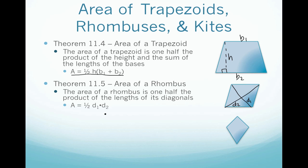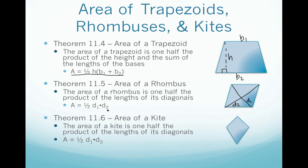The last area formula we're going to learn today is the area of a kite. The area of a kite is exactly the same as a rhombus: one-half of the product of the lengths of its diagonals. We draw those diagonals from opposite vertex to opposite vertex, calling them d1 and d2, and the area is one-half times d1 times d2.